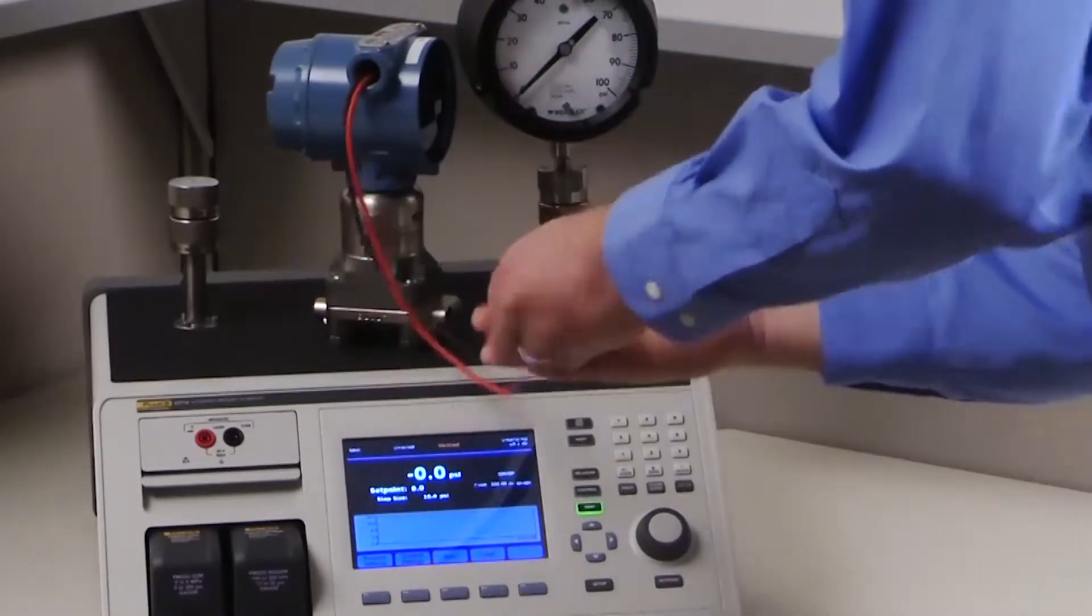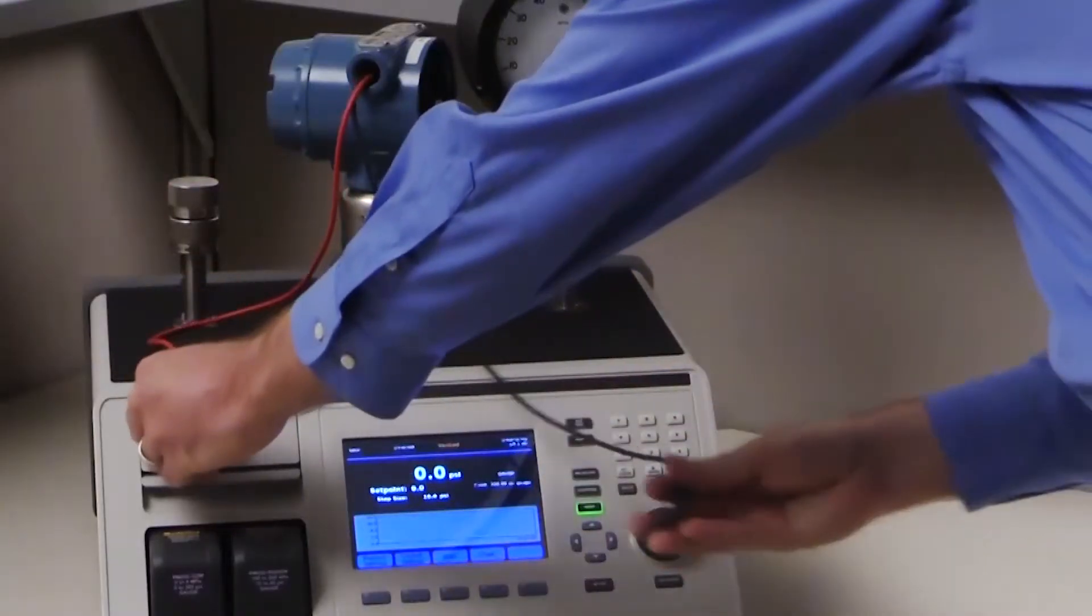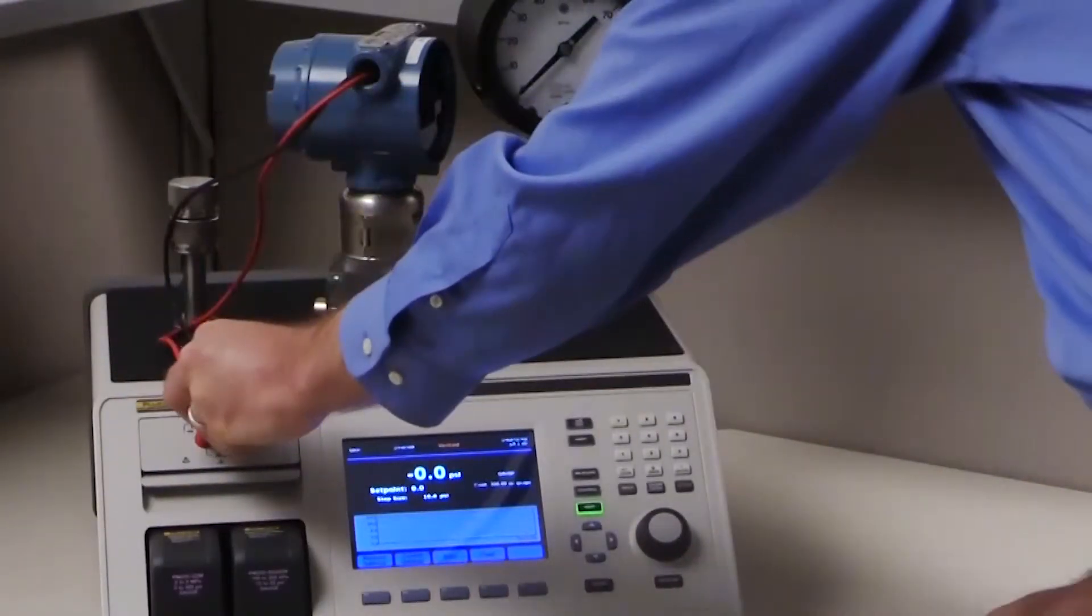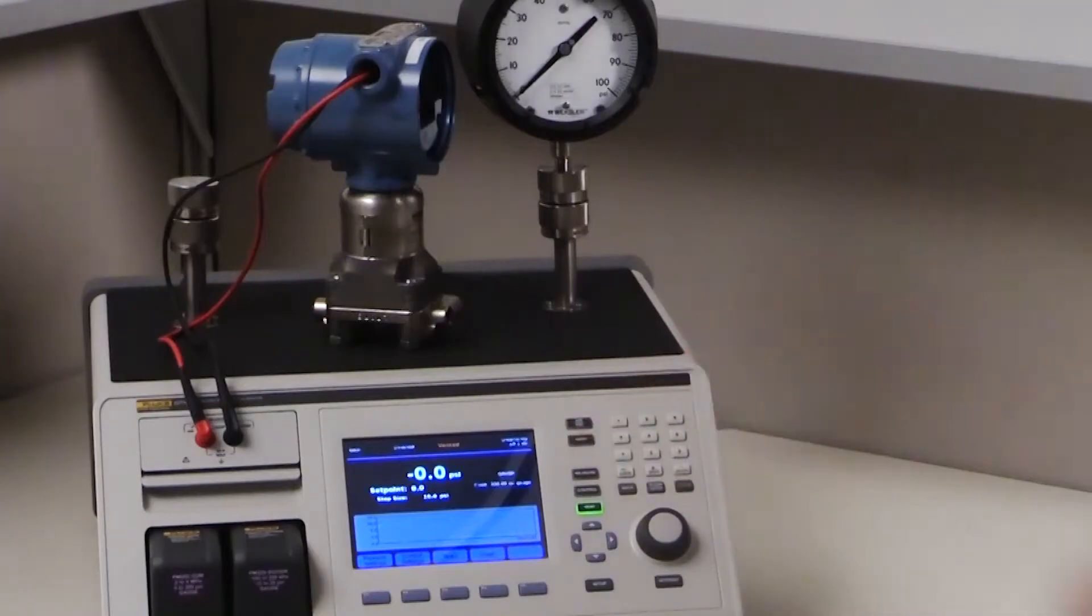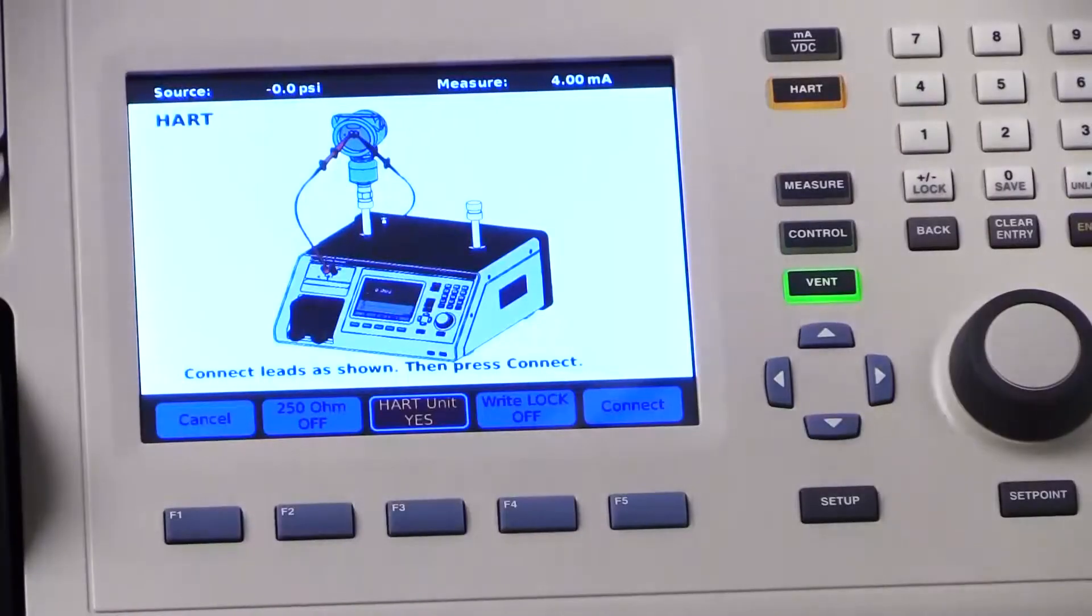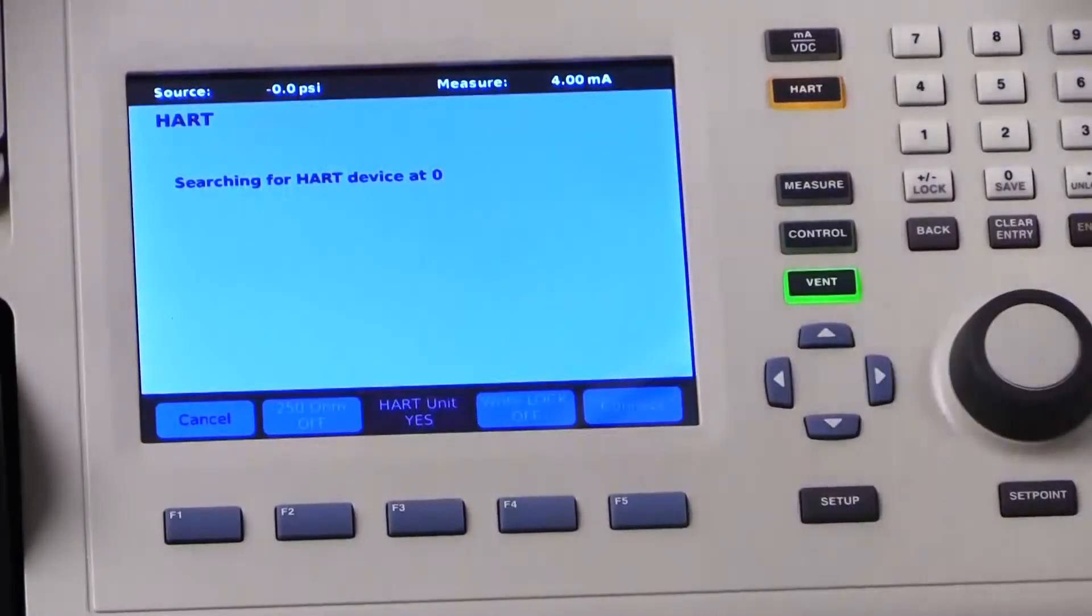HART communication is very similar. Connect the device under test to the EMM and press the HART button. The 2271A recognizes the device and allows you to trim and range it.